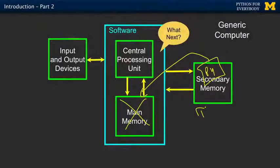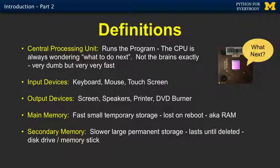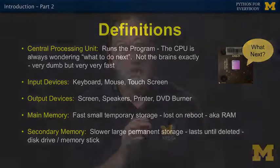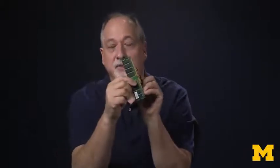In summary, the central processing unit is very simple — it's the closest thing computers have to brains, and it wants to answer the question of what to do next. We have to feed it the answers through memory, which is your programs. Then we have input devices, output devices, main memory, and larger permanent storage in secondary memory.